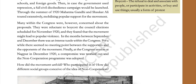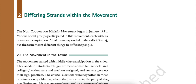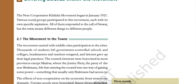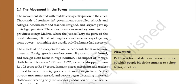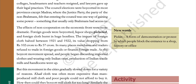The non-cooperation Khilafat movement began in January 1921. Various social groups participated, each with its own specific aspirations. All of them responded to the call of Swaraj, but the term meant different things to different people. The movement started with middle class participation in the cities. Thousands of students left government-controlled schools and colleges. Headmasters and teachers resigned and lawyers gave up their legal practices. The council elections were boycotted in most provinces except Madras, where the Justice Party — the party of the non-Brahmins — felt that entering the council was one way of gaining some power, something that usually Brahmins had access to.